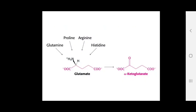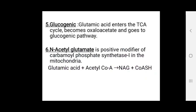Glutamine, proline, arginine, and histidine all form glutamate. From that, glutamic acid is formed, and from glutamic acid it is converted into alpha-ketoglutaric acid. Glutamic acid then enters the TCA cycle, so it is glucogenic and becomes oxaloacetate, going into glucogenic pathways.